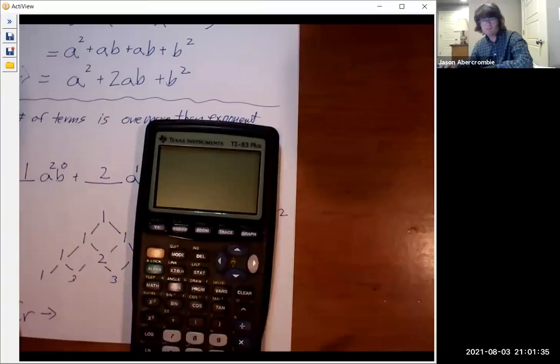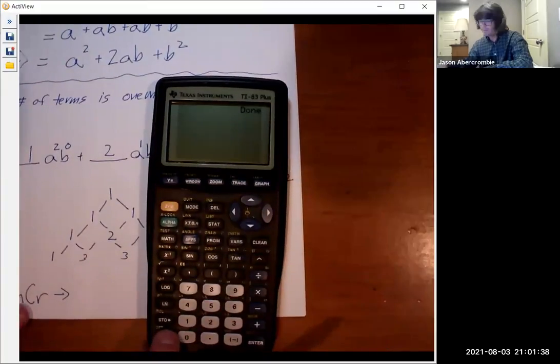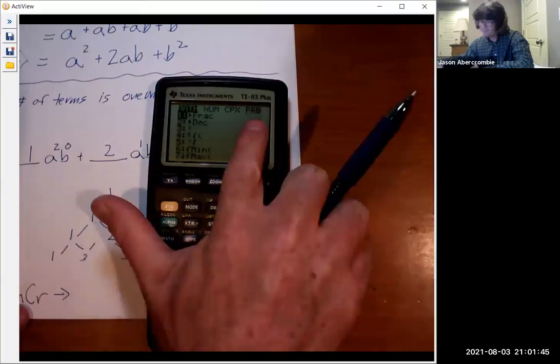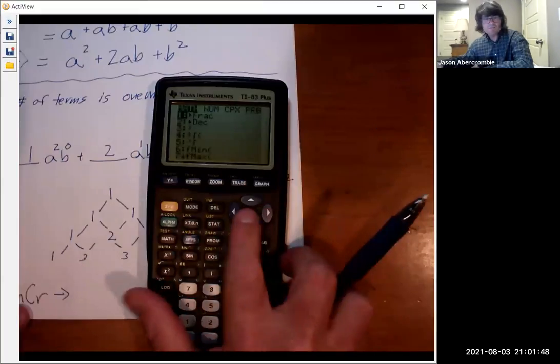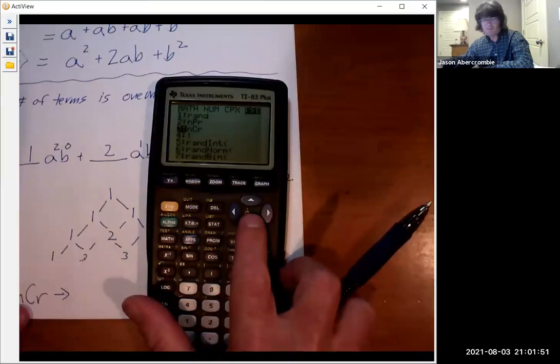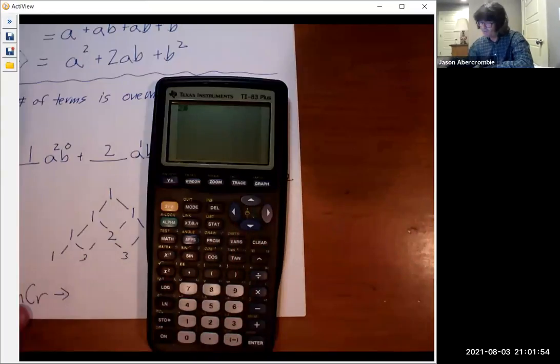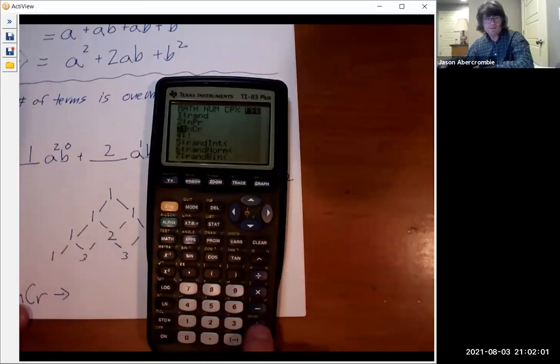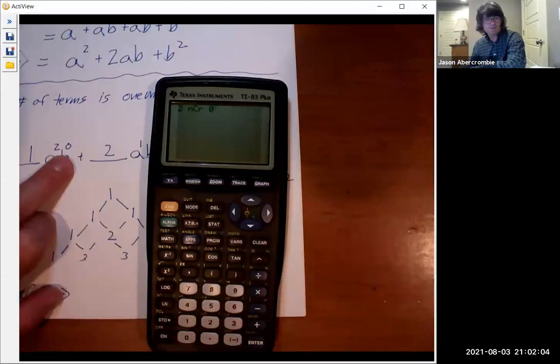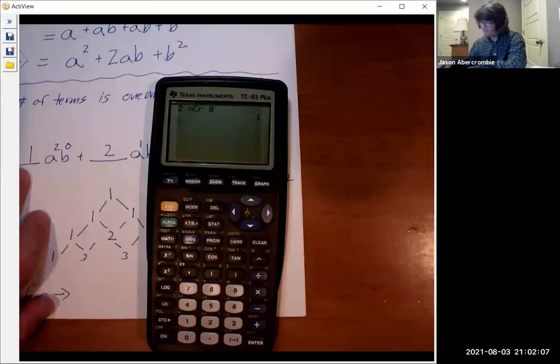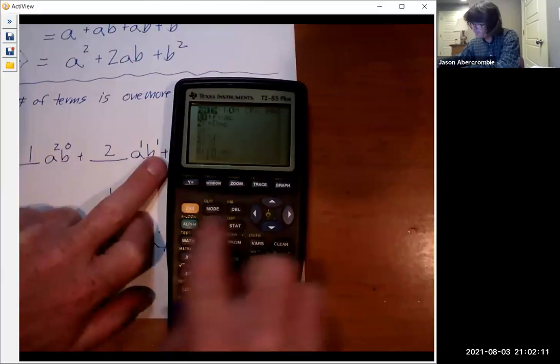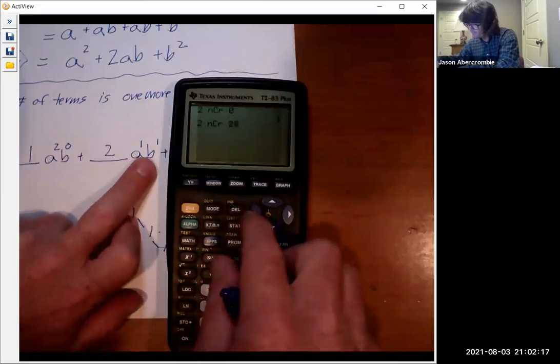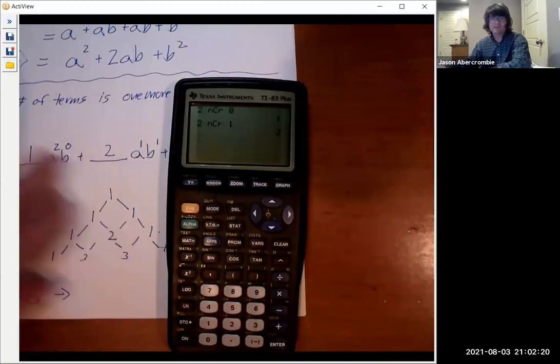So for example, let me turn this on. By the way, NCR is in the math menu right here. Push math. Then go to PRB, probability. And then down to option three is NCR. So what you would do is you'd write two. And then you go to math, probability, and then NCR. And then you'd, for example, put zero. And we should get a one. And we did. And then you could do 2 NCR 1. And that should be a two. And it is. So that's another way to get these coefficients.